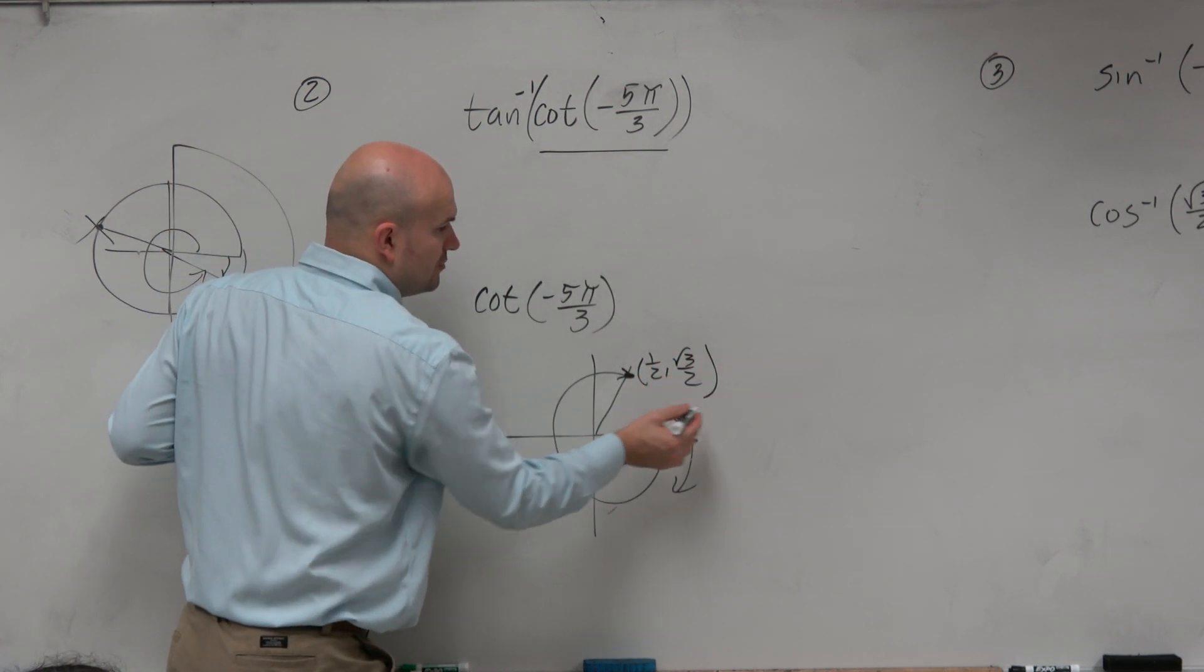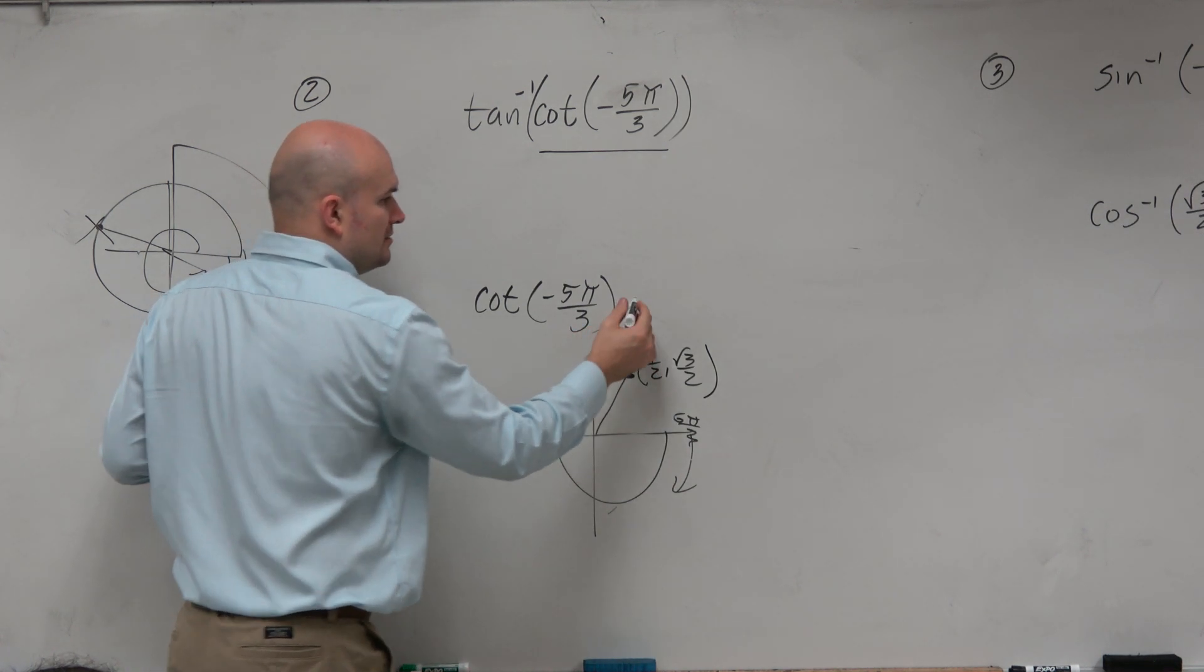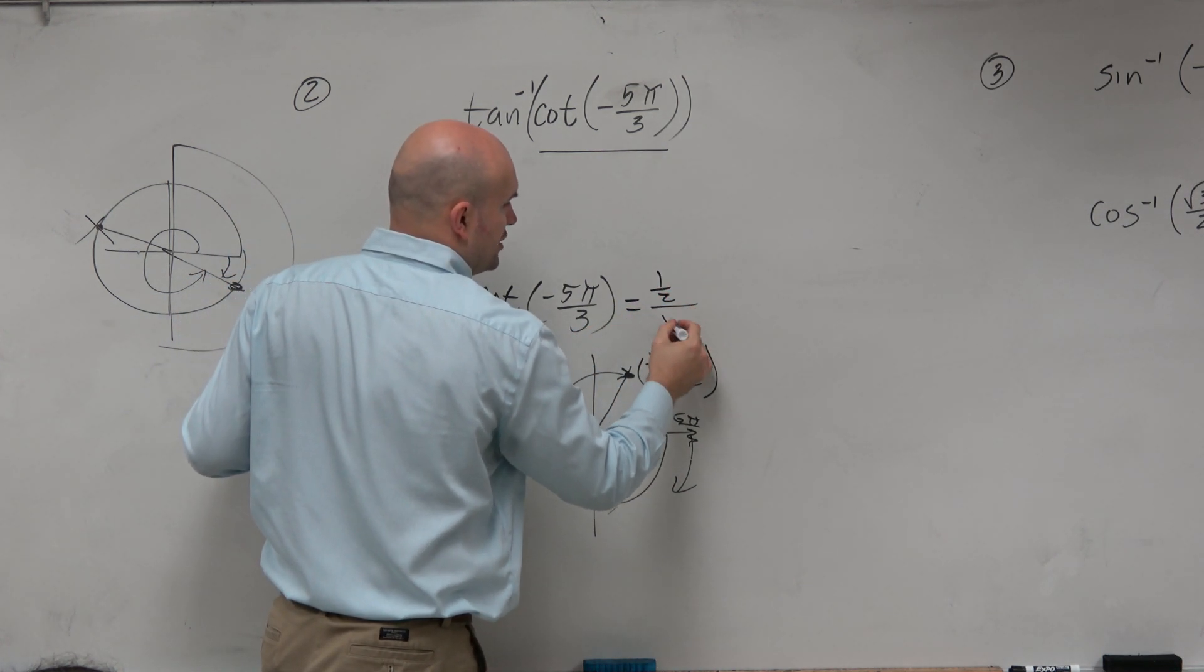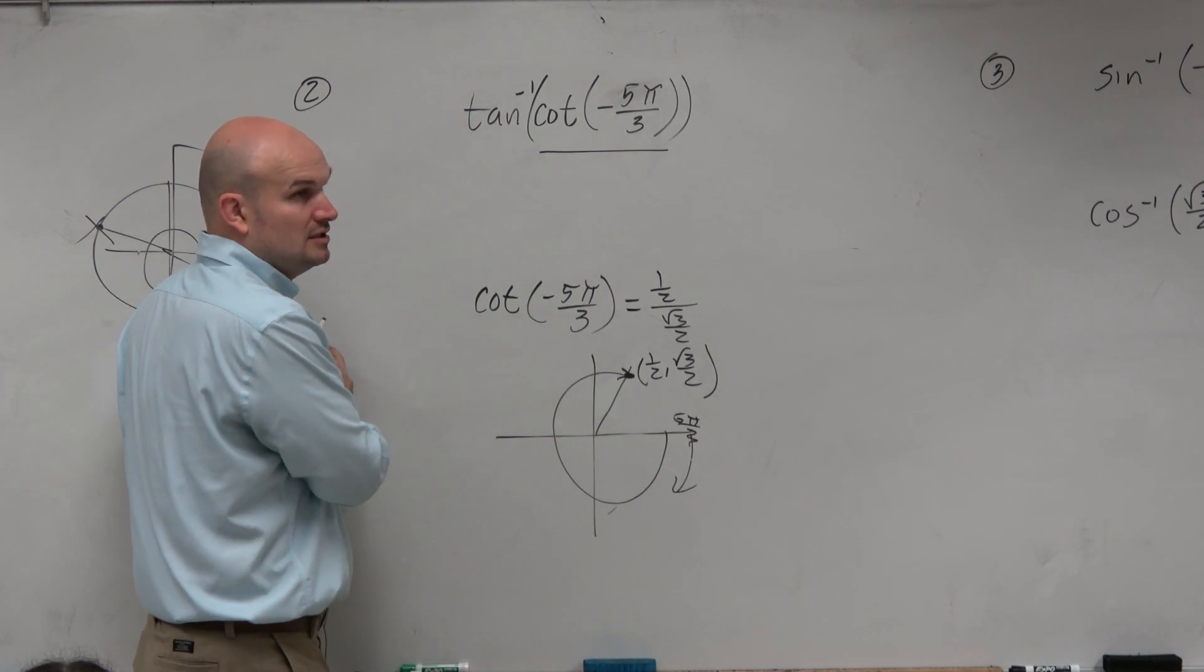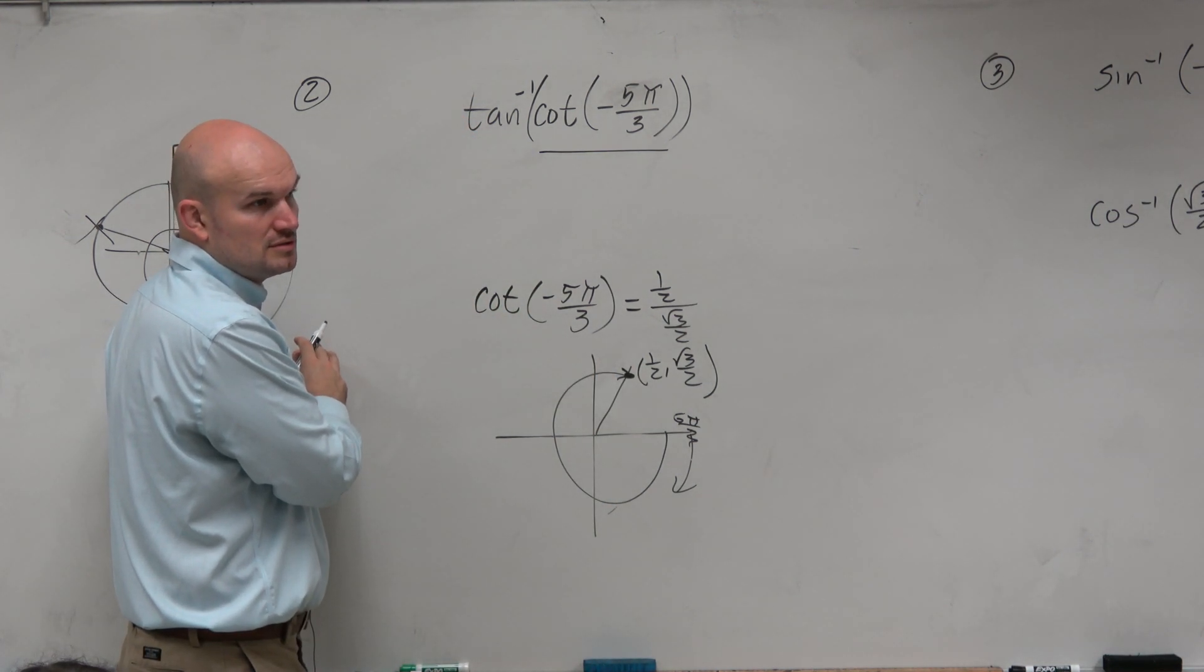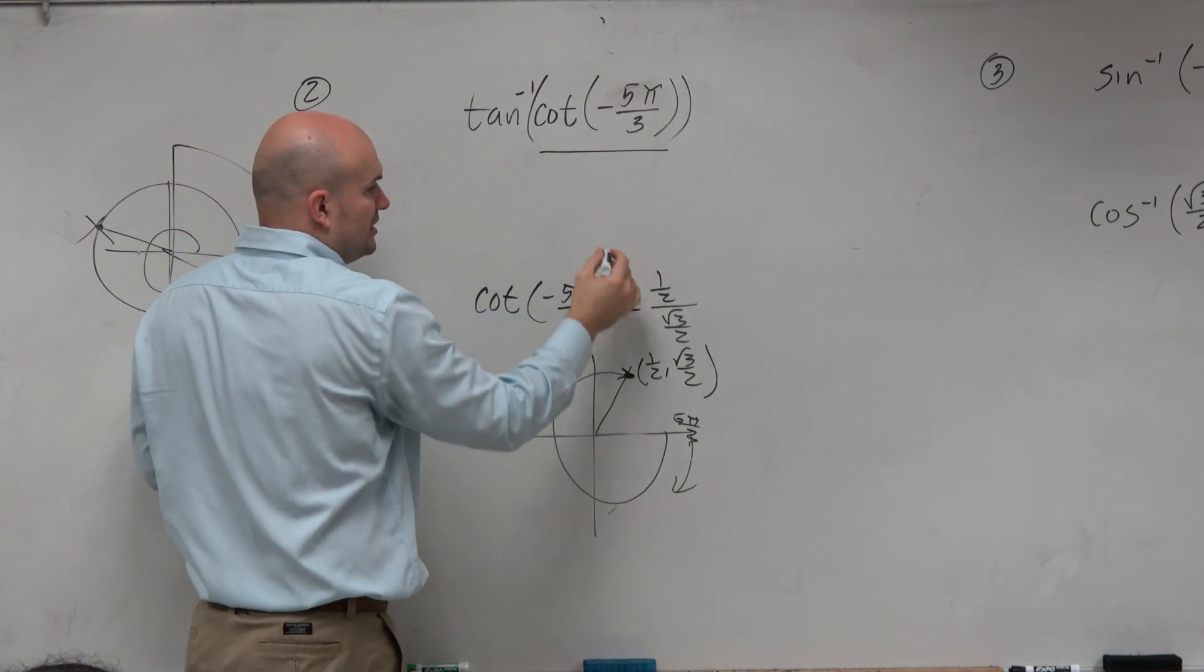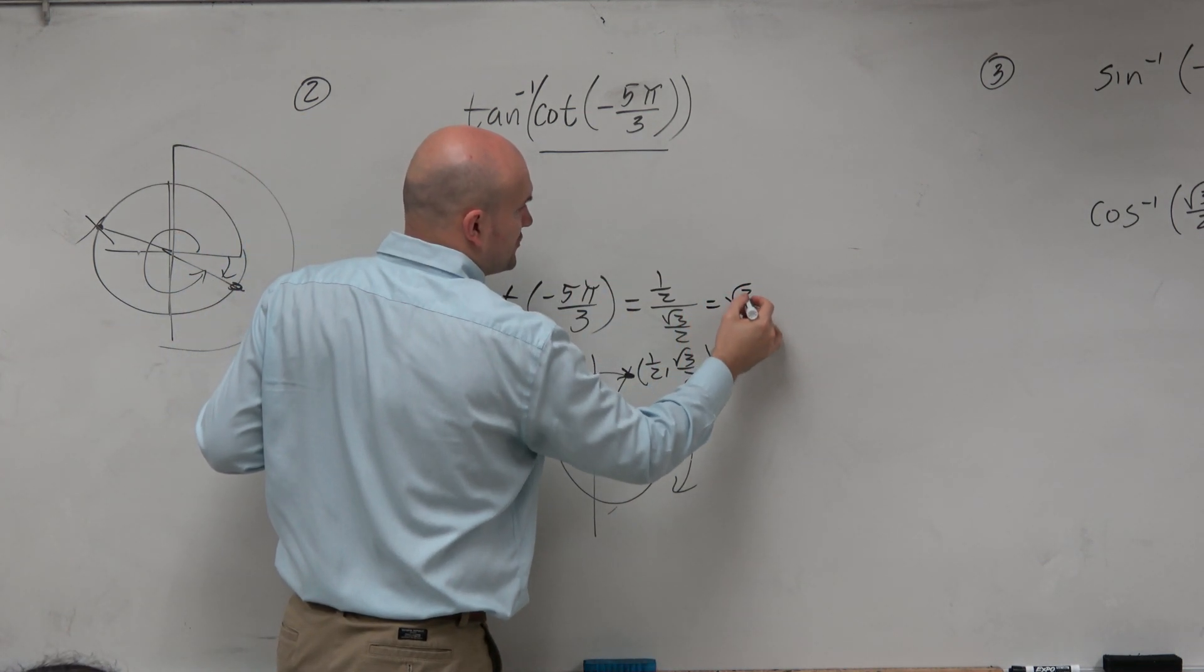So the cotangent, which would be the x over the y, and then I already know what that simplifies to, even though it's over there as well. I know that's going to simplify to square root of 3 over 3. So really, this is equal to square root of 3 over 3.